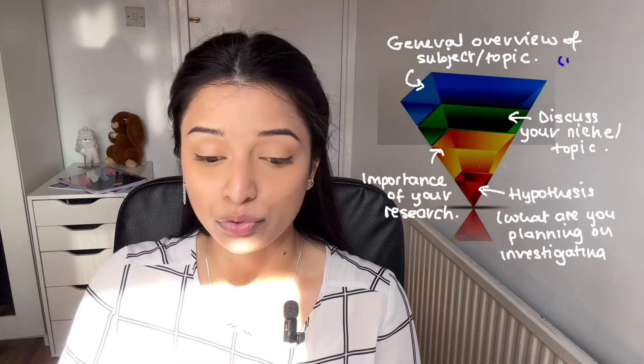Coming to each of the subsections, beginning with the introduction. Whenever I'm constructing an introductory paragraph, I always like to think of it as being like an inverted triangle. You want to start off with a more generalized overview of the subject matter and then narrow down your focus to the particular aspect you're wanting to investigate — and also why your research is important or relevant to that topic. Always start more generalized and then narrow your focus towards your hypothesis and the importance of your research.